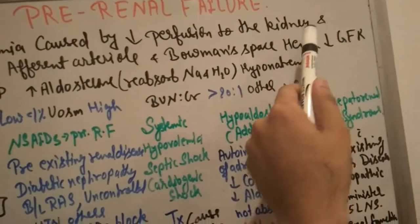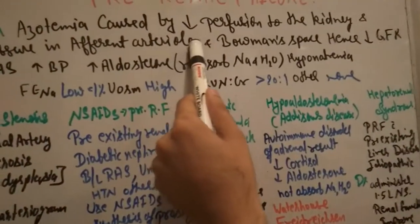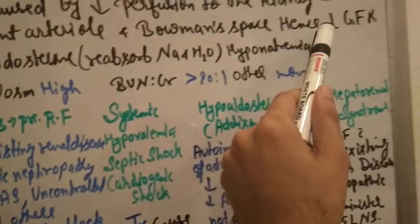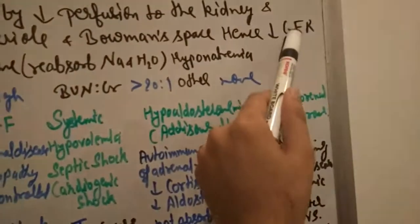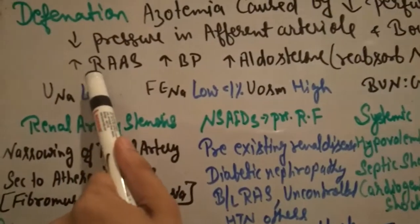There is decreased supply of blood to the kidney, decreased pressure in afferent arterioles. The pressure decreases in Bowman's space, hence the GFR also decreases.